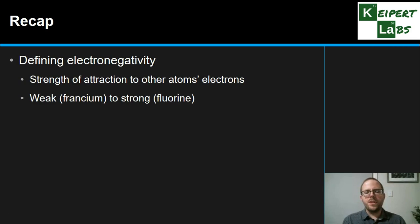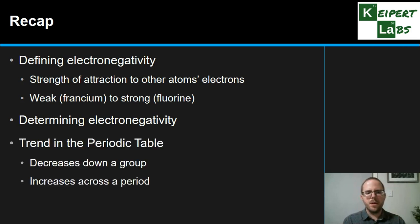Just to recap, we defined electronegativity as the strength of attraction of one atom to the electrons of another atom, going from the weakest being francium or maybe cesium, to the strongest being fluorine. We looked at how we determine this based on a range of properties from how atoms connect with others in a molecule. And we looked at the idea that in the periodic table it decreases going down a group and increases going from left to right across a group. Thanks very much for watching. Bye for now.